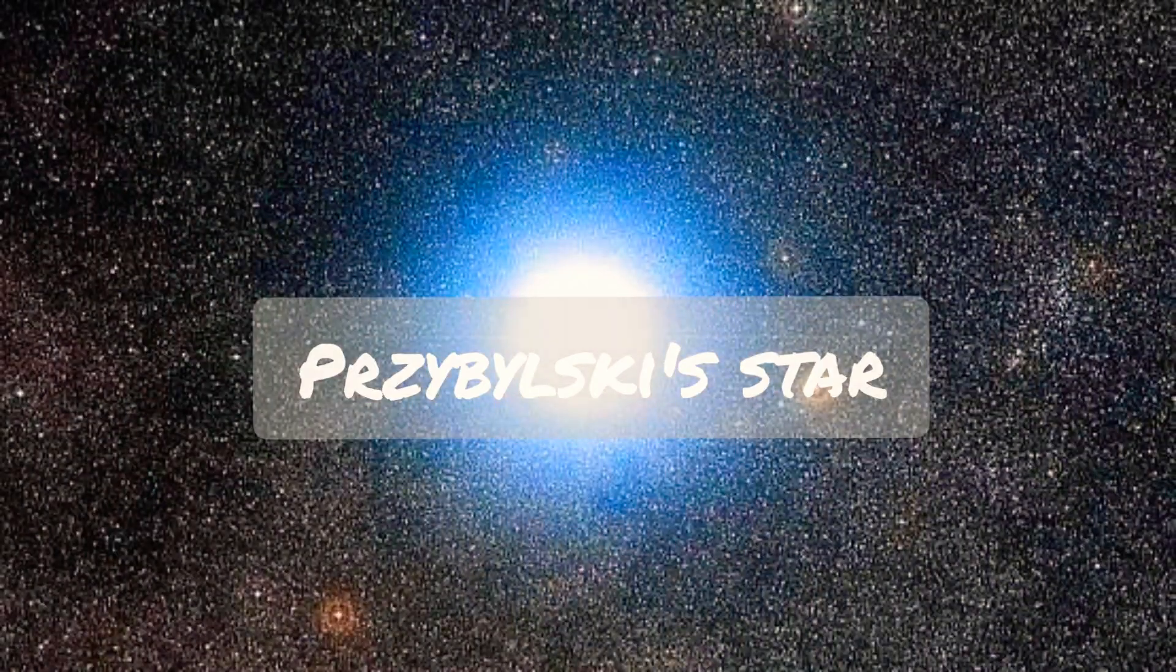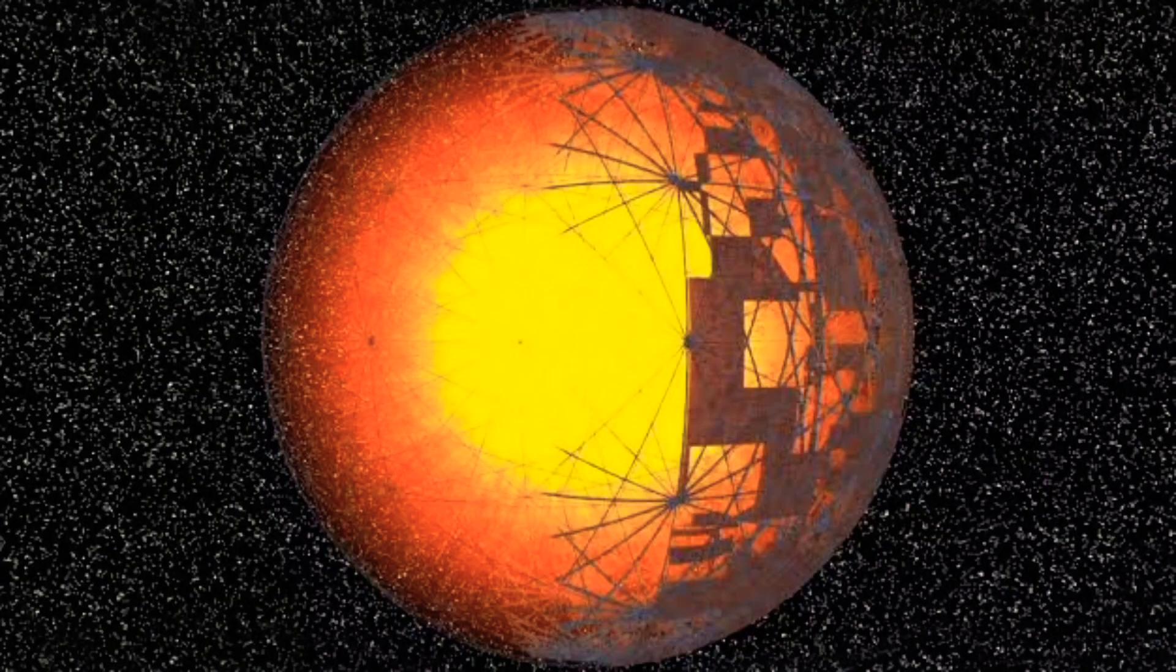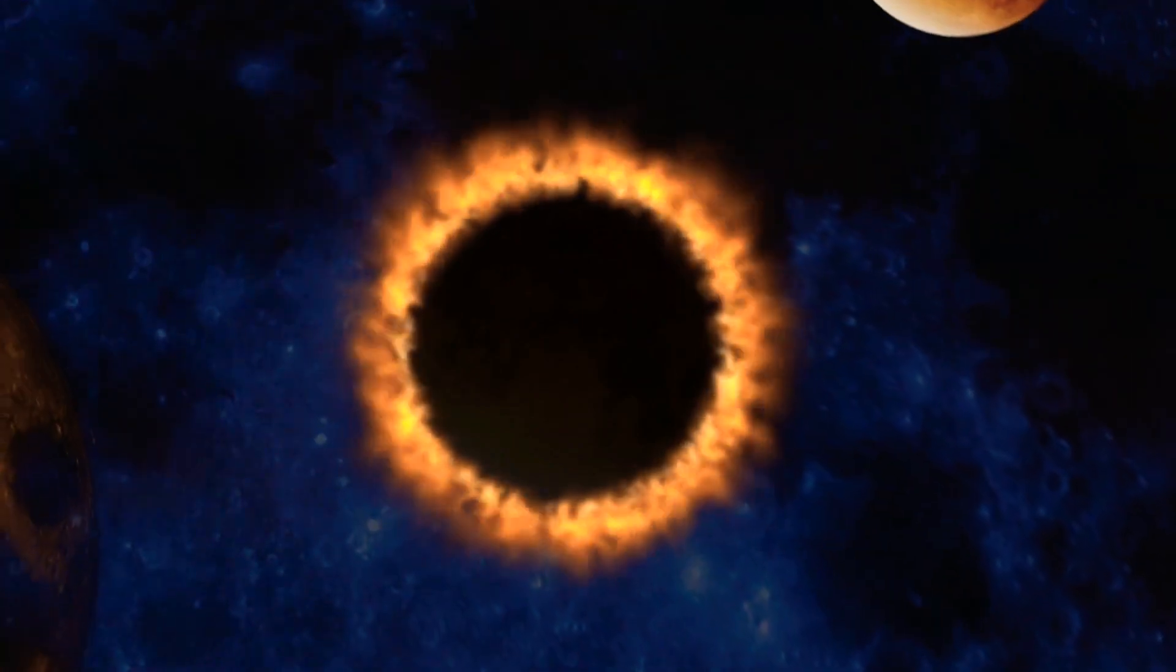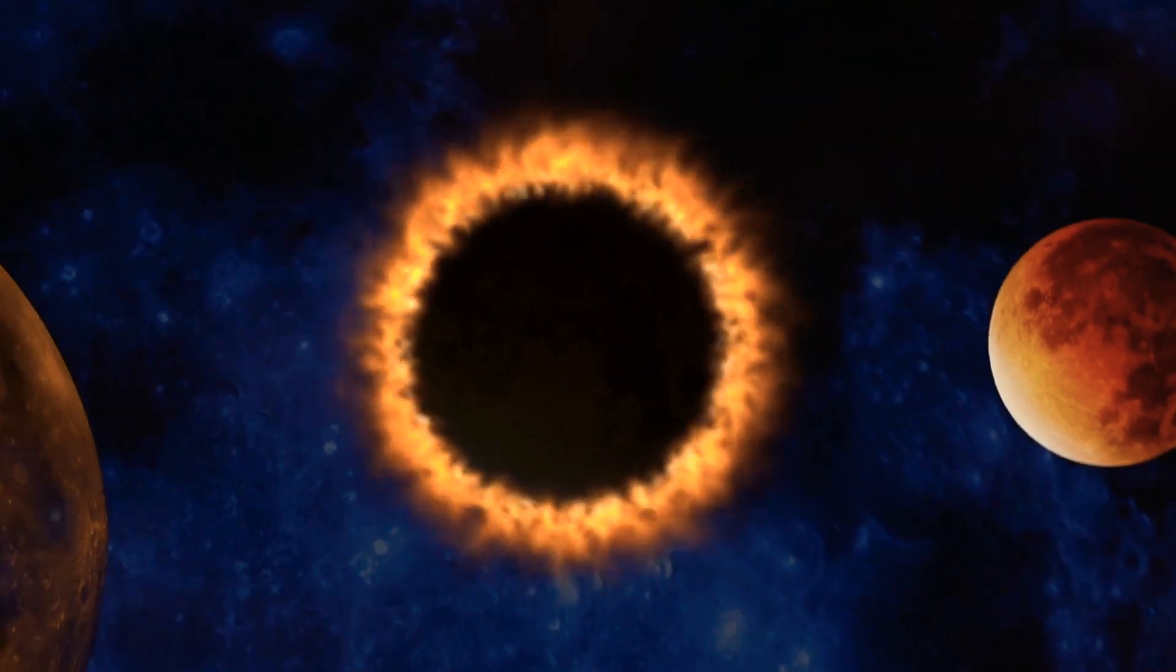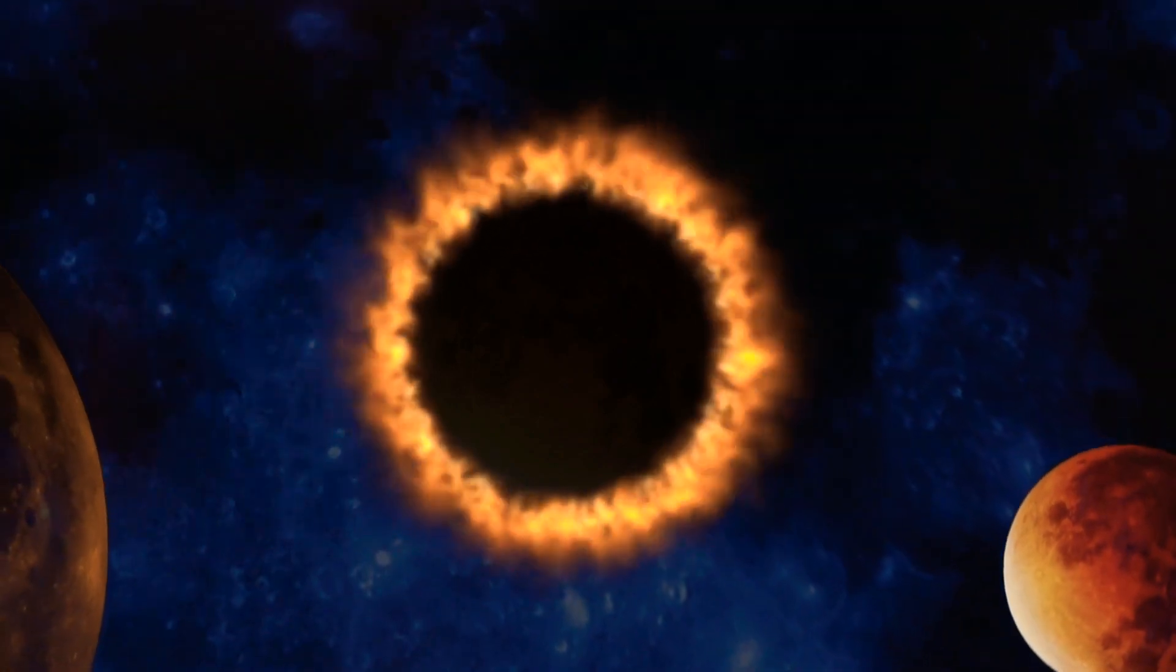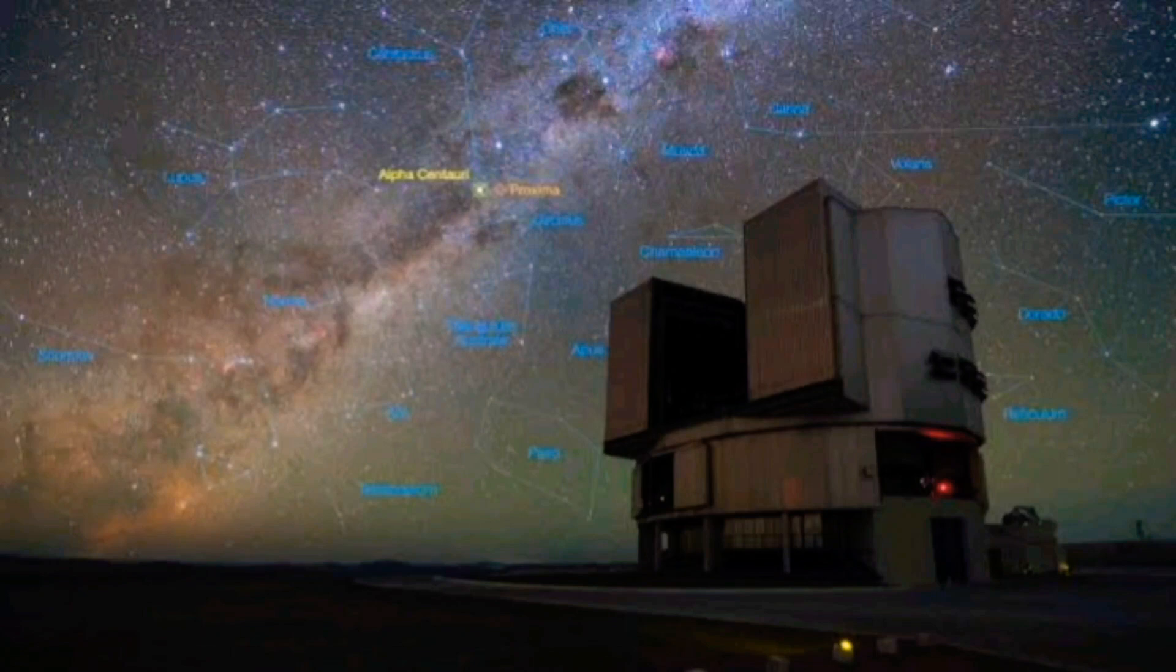Przybylski's star. Przybylski's star, or HD 101065, is a rapidly oscillating star about four times the mass of the sun, and at roughly 355 light-years from the sun, the closest neighboring star from our system, found in the southern constellation of Centaurus. Just beyond what our eyes can see is a truly weird star.